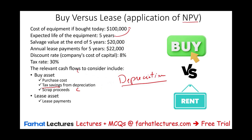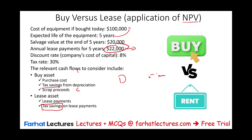The lease payment of $22,000 is relevant for us. We are going to have tax savings because the lease payment is tax deductible. Therefore, the lease payment is $22,000, but we're going to enjoy some tax savings, and we will show how we compute those. So those are the relevant cash flows. Now we are ready to compute the net present value of buying the asset versus leasing the asset and see which one we should undertake.